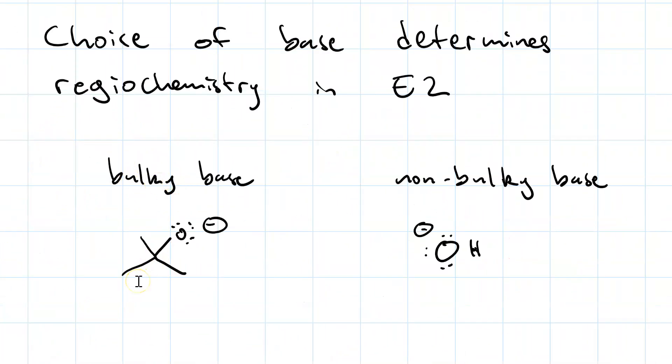A bulky base, like tert-butoxide, the reagent you'd use is t-BuOK. That's potassium tert-butoxide. That bulky base favors Hoffman elimination.